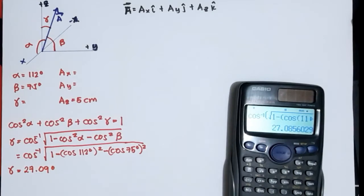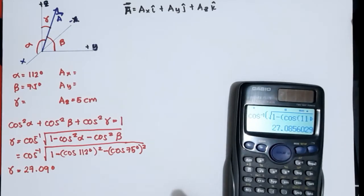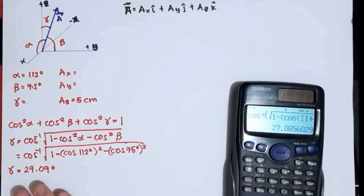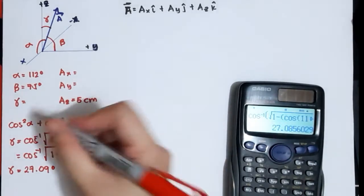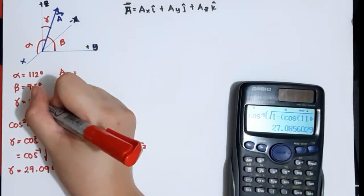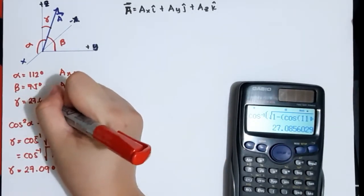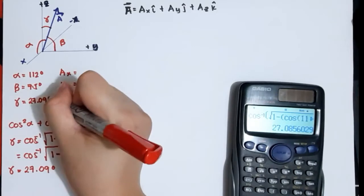So definitely 27.09 degrees is the answer. Unlike what we did last time where we subtracted 180 minus the answer of gamma, here we use this directly as our answer because it is less than 90. So gamma equals 27.09 degrees.